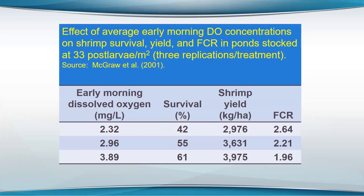Here's data from shrimp ponds where they managed to achieve different early morning dissolved oxygen concentrations — set up to try to maintain two, three, and four milligrams per liter, though it couldn't quite be achieved. They got averages of 2.3, 2.96, and 3.89 milligrams per liter. You can see the survival and FCR improved with higher oxygen, though the FCR wasn't particularly good even at high oxygen since this was done a long time ago.